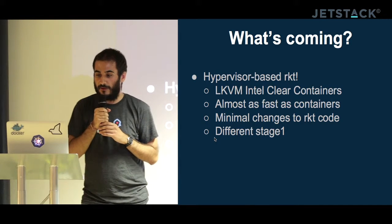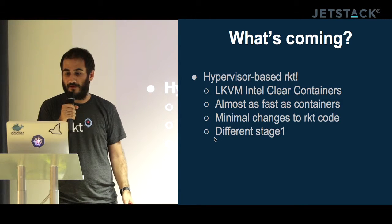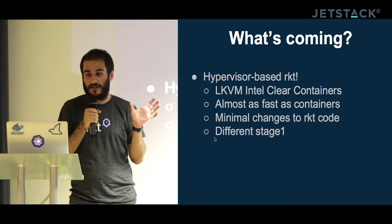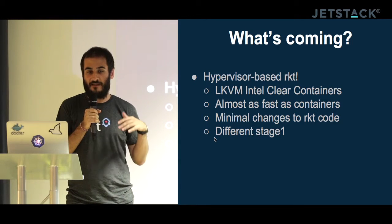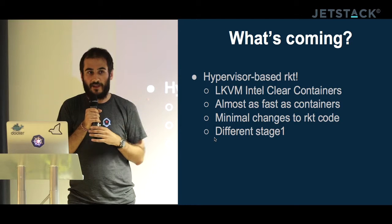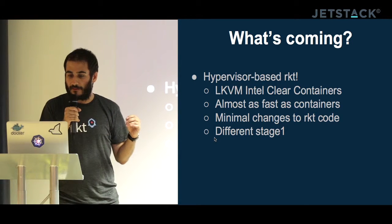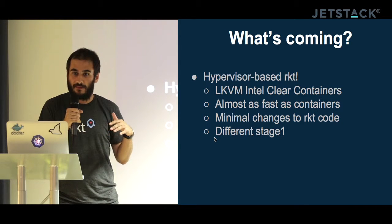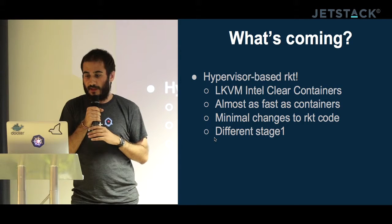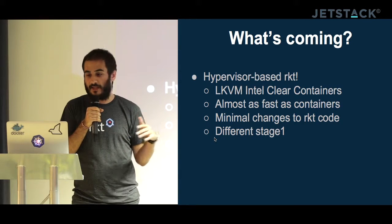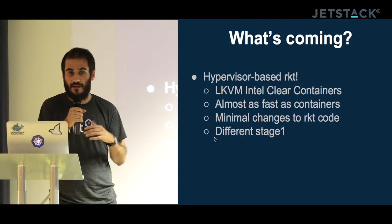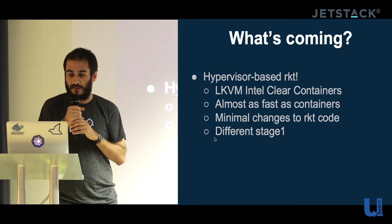Basic support for Intel Clear Containers got merged last week. It's basically a KVM — specifically LKVM — so it can only run Linux, but it's very fast. You can start a container at roughly the same time as starting a real hypervisor machine. It required minimal changes to Rocket because it's basically just a different stage one, with small changes to stage zero. With networking and volumes support in the next release 0.8, it won't just be a proof of concept.